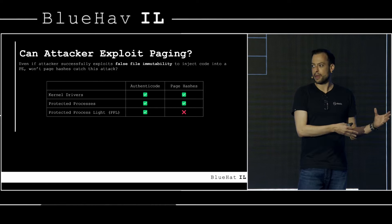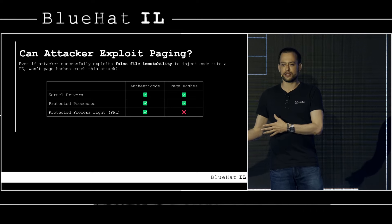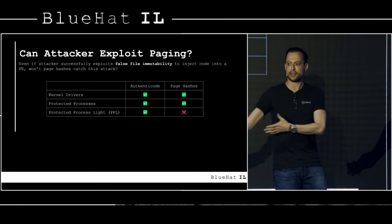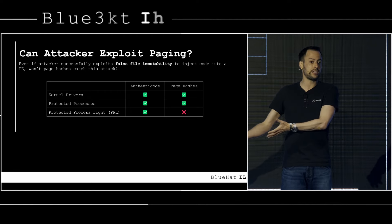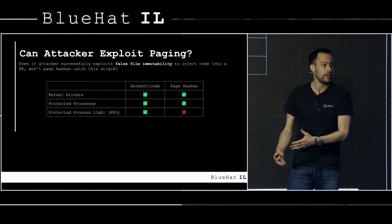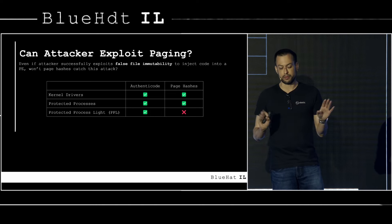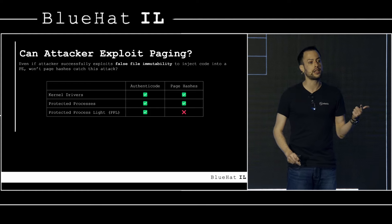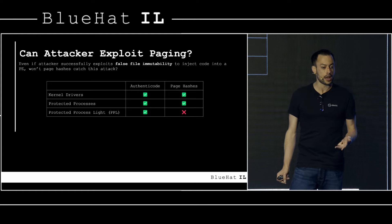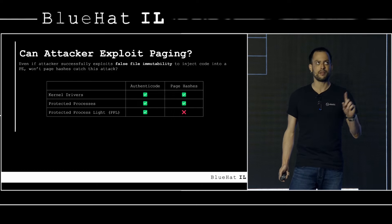You might ask: won't page hashes catch this? By changing the DLL you're changing its page hashes, so code integrity should detect it. That's true for kernel drivers and full Protected Processes — but it is not true for Protected Process Light. PPL does not enforce page hashes most of the time.